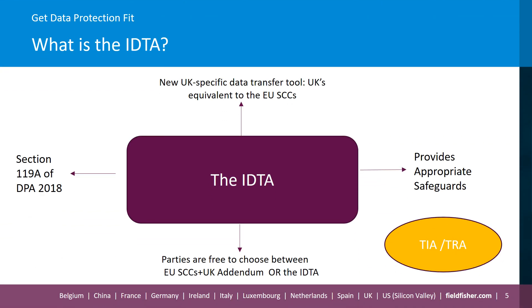So what is the IDTA? It is the new UK specific data transfer tool issued under Section 119A of the Data Protection Act 2018. It provides appropriate safeguards required under Article 46 of the UK GDPR to transfer personal data to recipients who do not benefit from the UK adequacy regulations. The purpose of the IDTA is to ensure that the level of protection of personal data guaranteed under the UK GDPR is not undermined following a transfer out of the UK. The IDTA, which came into force on 21st of March 2022, is essentially the UK's equivalent to the EU standard contractual clauses.